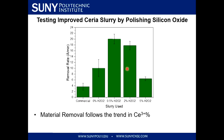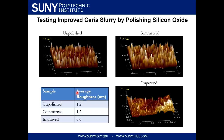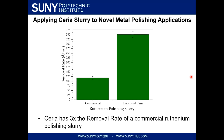This allows us to maximize both chemical and mechanical removal during polishing. For actual polishing results, we polished silicon oxide — a traditional target for ceria slurry. The highest removal rate comes at the point with the highest ceria 3-plus percentage. The values we achieved were many times higher than slurries used on the market today. We also measured flatness through AFM, and there is a dramatic smoothing of the surface from unpolished and commercial to our improved slurry.